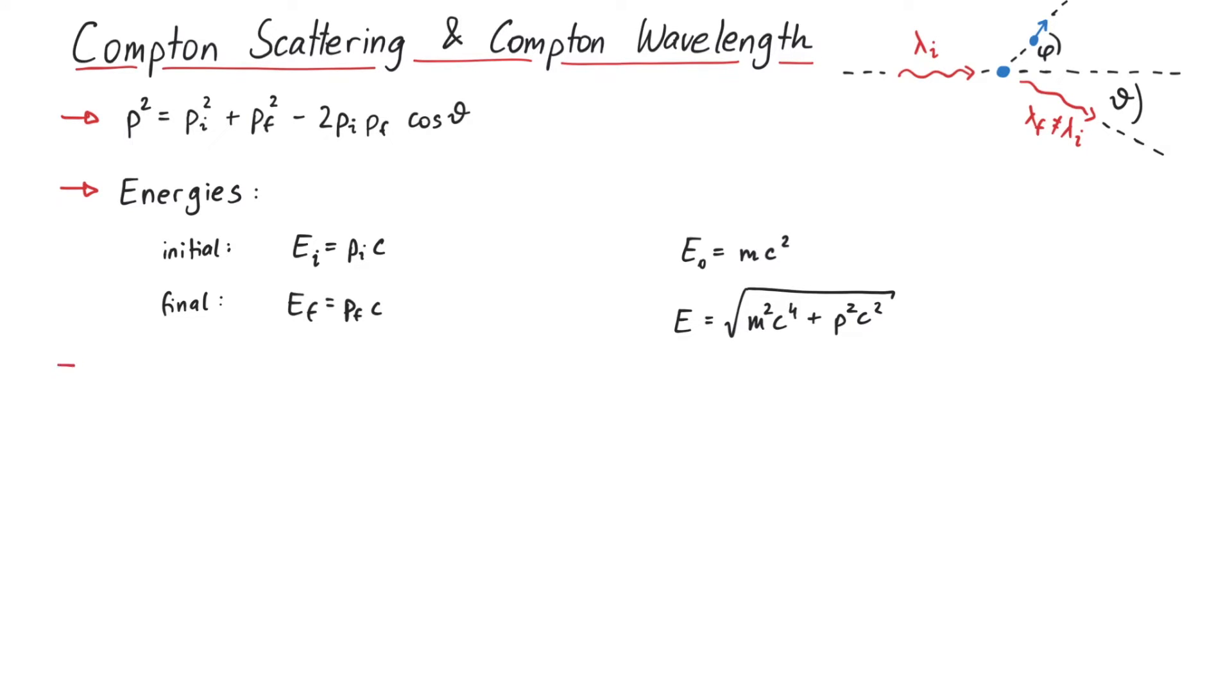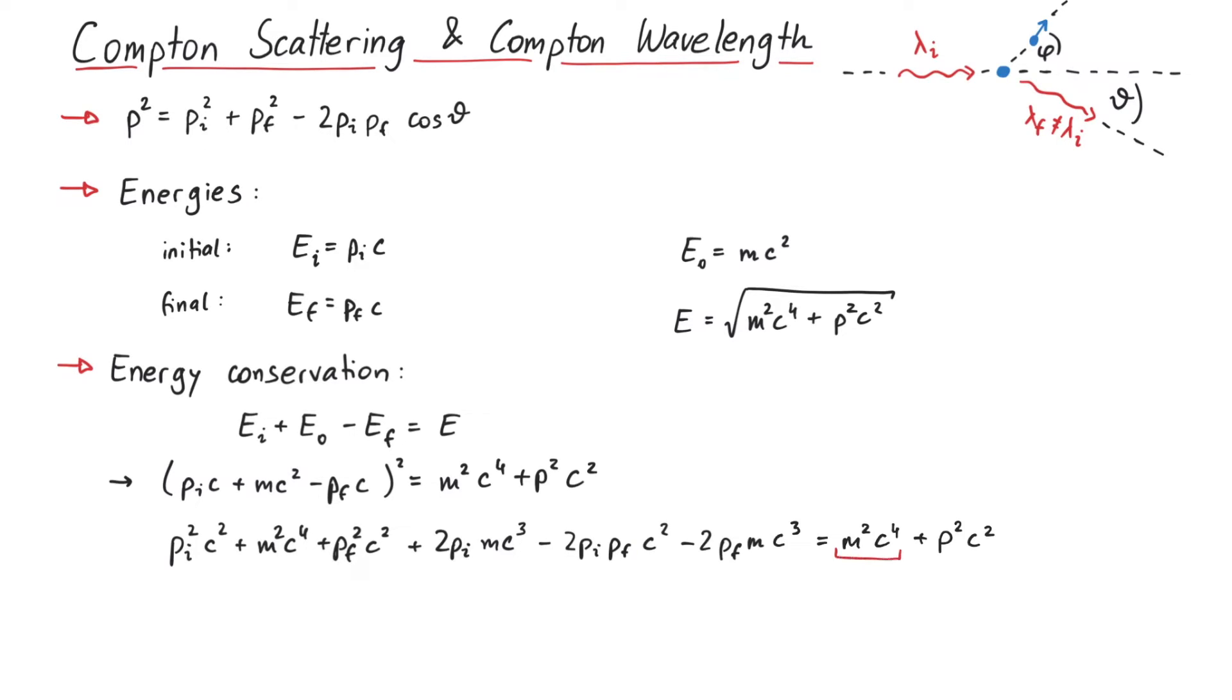It is useful to write conservation of energy such that the square root is isolated on one side, so that when we square this equation, we can get rid of the square root. We can now subtract this term on both sides, and also divide by c squared, to make things easier to read.